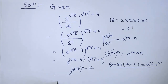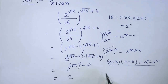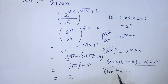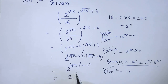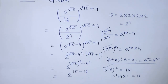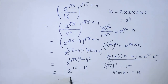We write the same base 2. We know that the square root of 15, whole to the power 2, equals 15. According to the rules of algebra, we write 15 minus 4 to the power 2, that is 4 times 4, which means 16. So the power becomes 15 minus 16, which equals minus 1. We write 2 to the power minus 1.